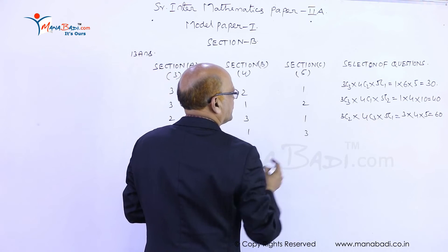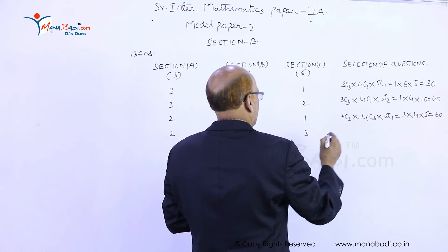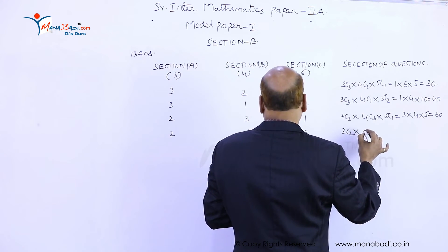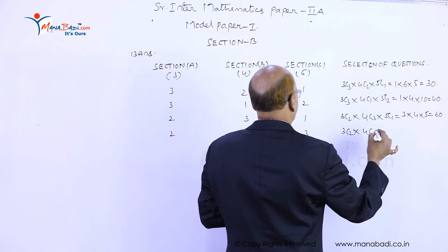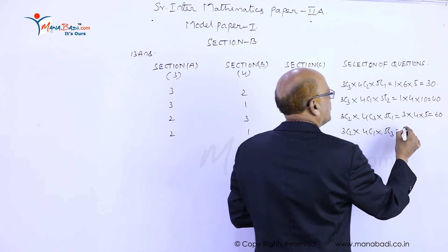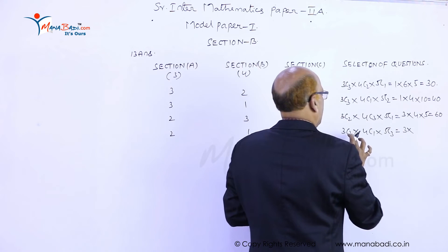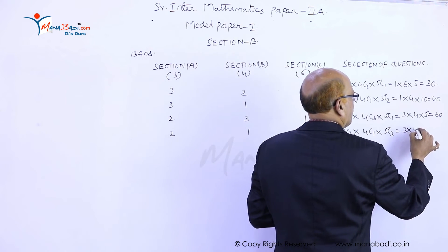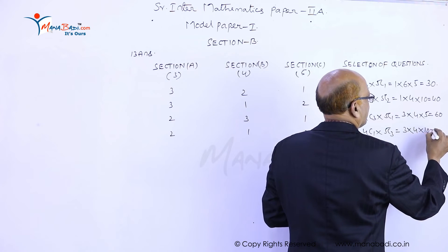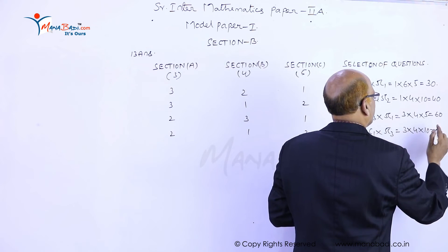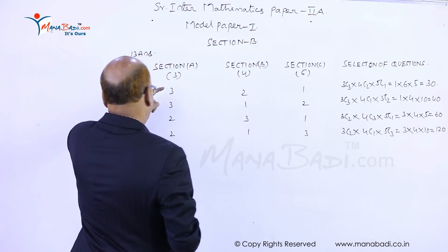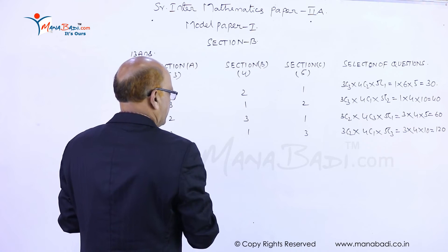Next selection: two questions from A, one question from B, and three questions from C. That will be 3C2 into 4C1 into 5C3. 3C2 is 3, 4C1 is 4, and 5C3 is 10, which equals 120.